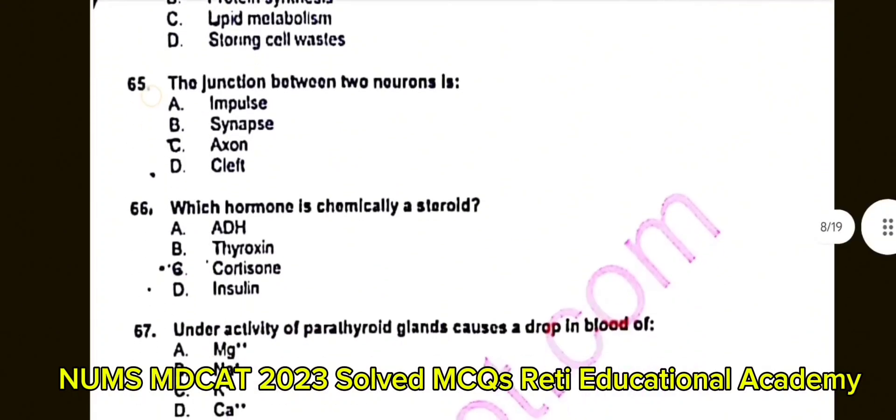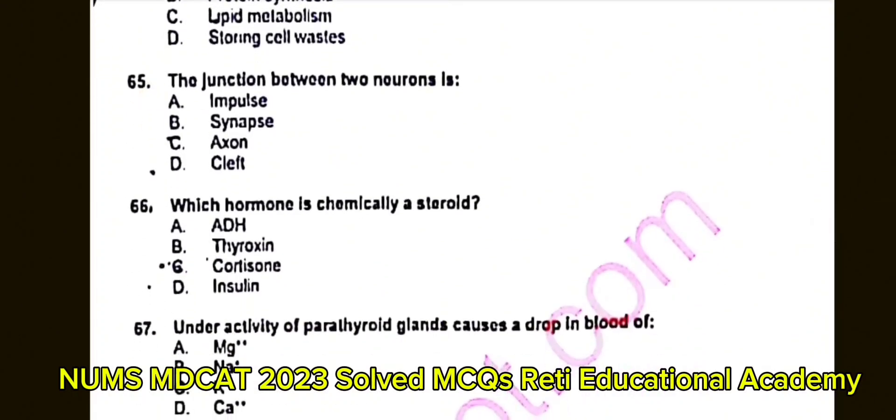Question number 66: Which hormone is chemically a steroid? A. ADH. B. Thyroxin. C. Cortisone. D. Insulin. The correct answer is C: Cortisone.